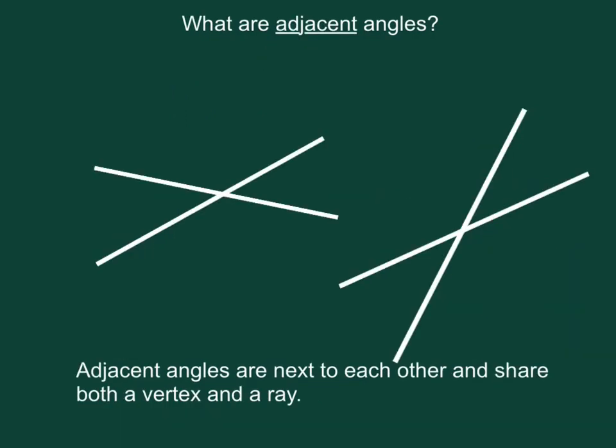Adjacent angles are next to each other and share both a ray and a vertex. So here's one angle, and the angle next to it would be made up of these two rays and this vertex. Can you see they share this vertex right here, and they share this ray right here.